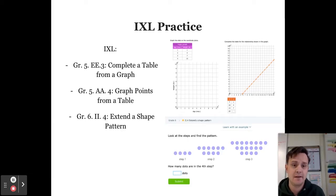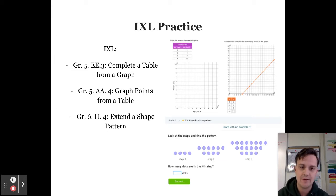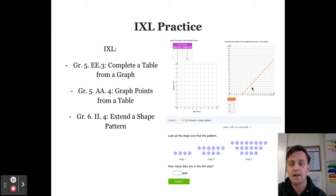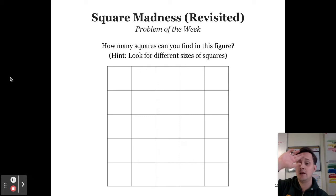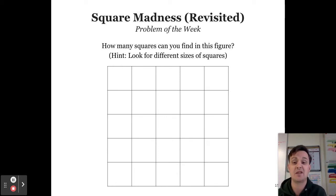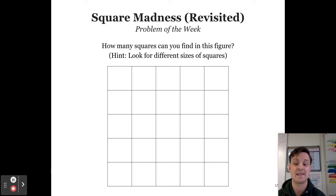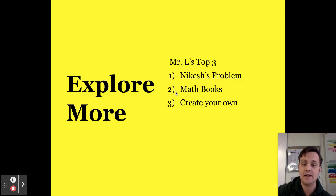If you finish your key practice, there is lots of IXL practice to do. Three good skills are: Grade 5 EE3 — completing a table from a graph; Grade 5 AA4 — graphing points from a table; and Grade 6 II4 — extending a shape pattern. There is no key or exemplar for those today. Your problem of the week is 'Square Madness Revisited' — how many squares can you find in this figure? Hint: look for different sizes. Can you use graphs or tables to extend this problem and find patterns to answer how many squares are in any size square — like a 10×10 or even a 20×20?